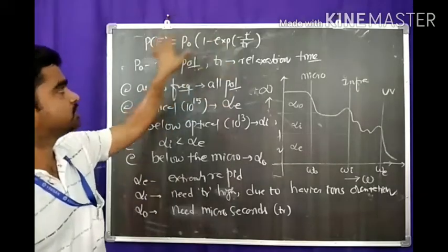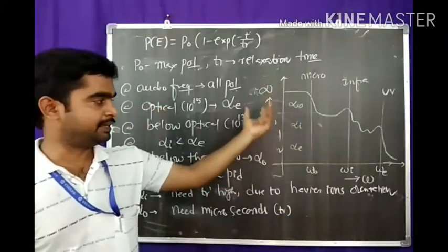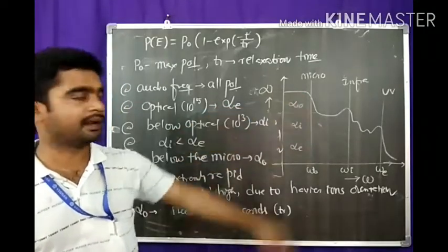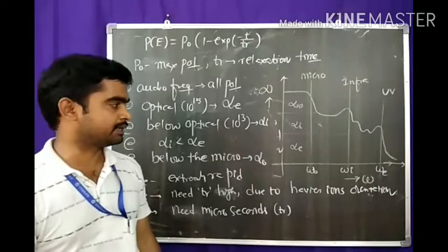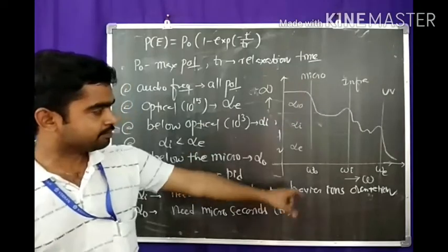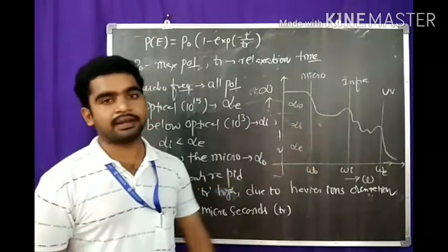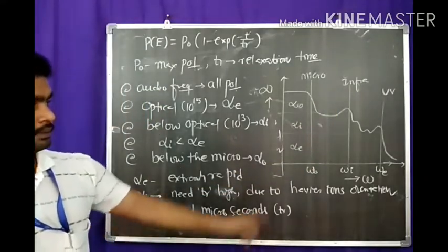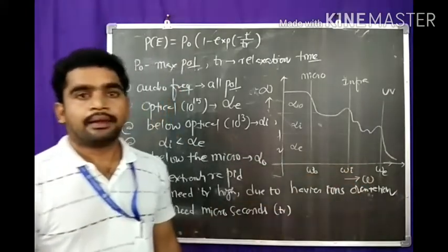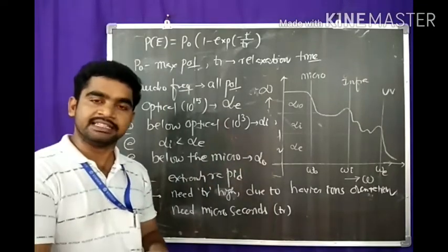The graph is between frequency and polarizability, showing three polarizations: electronic polarization, ionic polarization, and orientational polarization at different frequency levels. Up to the microwave region, only orientational polarization is possible. Up to the infrared region, ionic polarization exists. In the ultraviolet range, electronic polarization is extremely rapid, so it peaks at the optical frequency range, that is 10 to the power of 15 Hz.